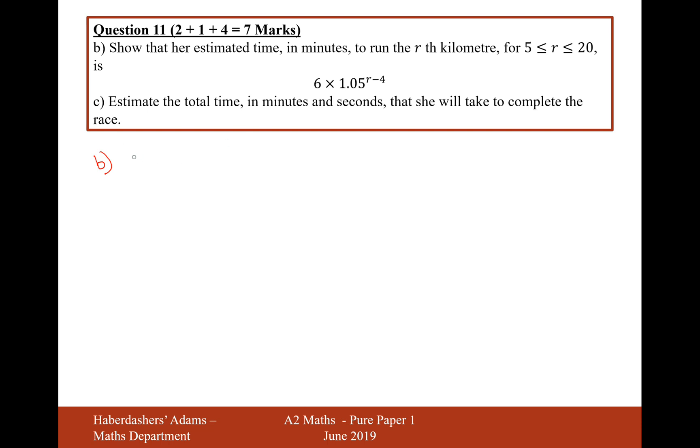1.05 is the decimal multiplier for 5% increase. It's a geometric progression, but the increase only starts at the fifth kilometer.